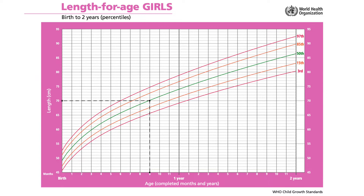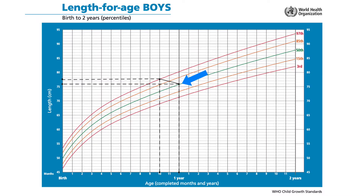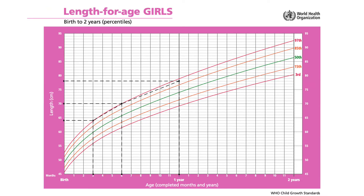Check whether a plotted point seems sensible. If necessary, remeasure the child. For example, a baby's length should not be shorter than at the previous visit — if it is, then one of the measurements was wrong. Let us use an example to understand plotting on this chart.